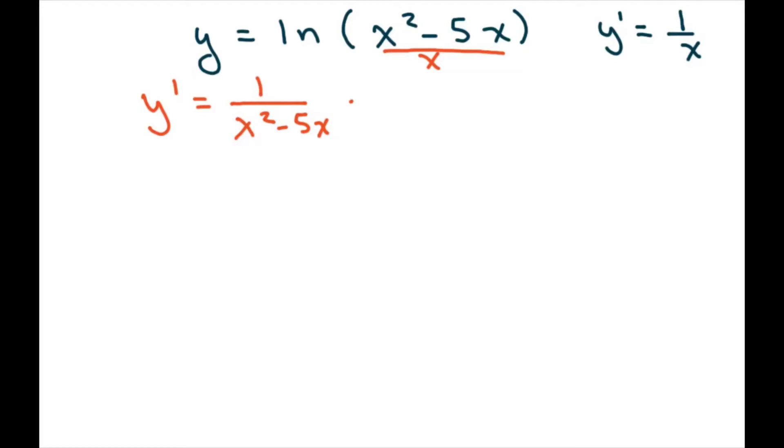Then you have to multiply it by this part right here. So the part right in here is going to be 2x minus 5. So the first derivative is going to be 2x minus 5 divided by x squared minus 5x.